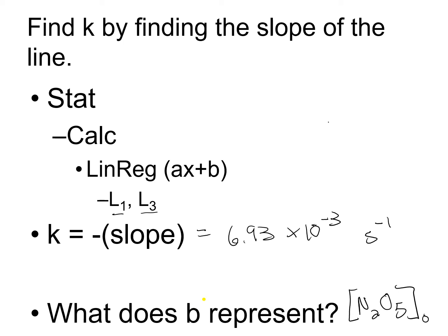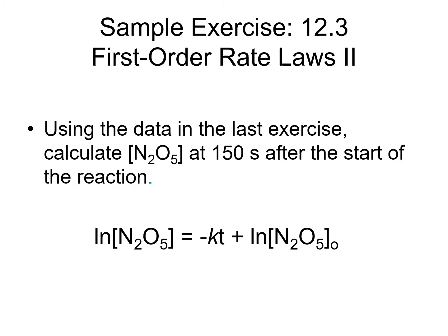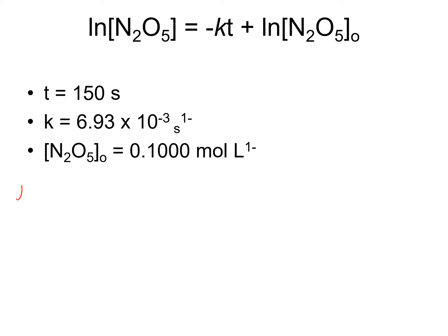Let's put this information to use. This is another problem from our textbook. We want to use the data we just calculated to find the concentration of N2O5 at 150 seconds after the start of the reaction. This is our equation: ln[N2O5] = -kt + ln[N2O5]0. Our goal is to find the concentration at 150 seconds. We have ln[N2O5] equals negative 6.93 times 10 to the minus 3 per second times 150 seconds, plus the natural log of our initial concentration, which is 0.1000.